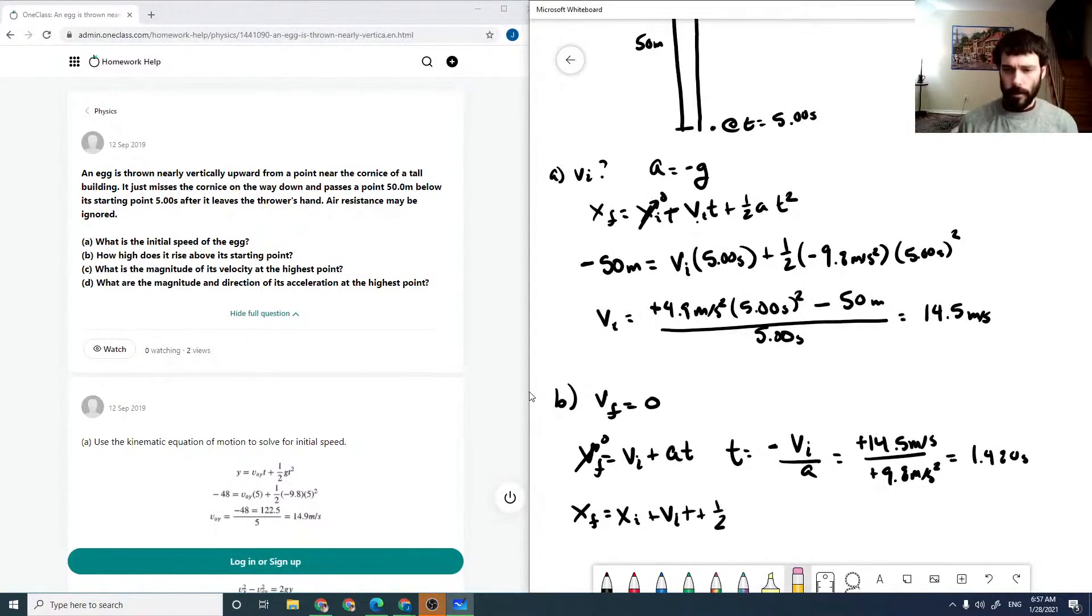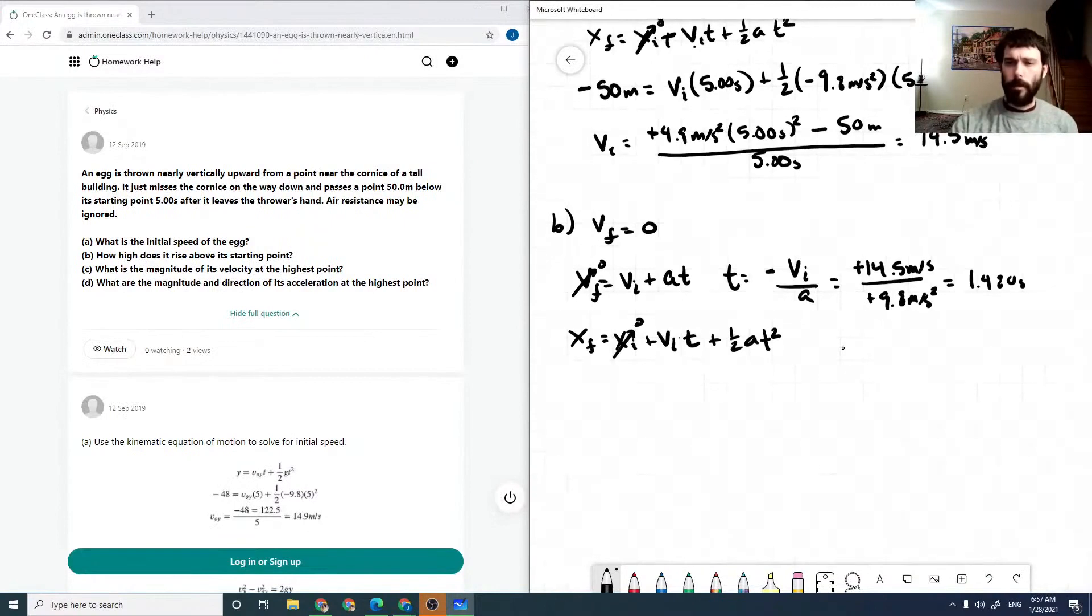Oops, that's a lot of extra pluses there. Vi t plus one half at squared. Again, our xi is 0, and we know everything in this equation here.